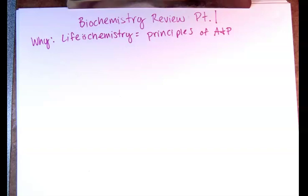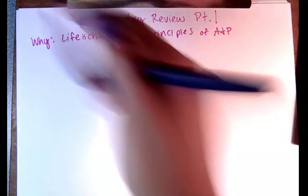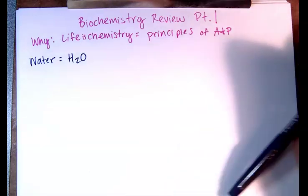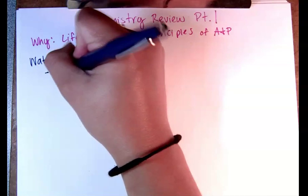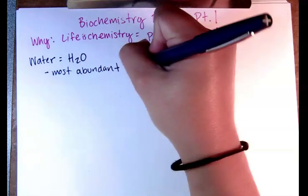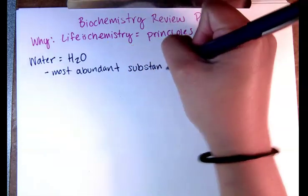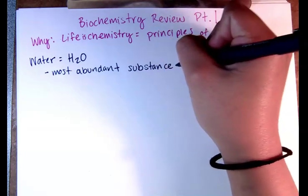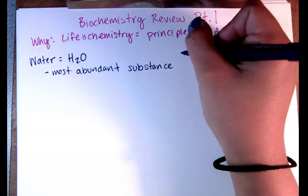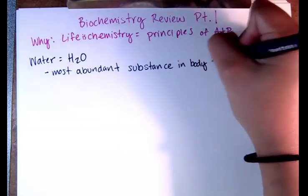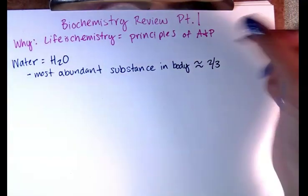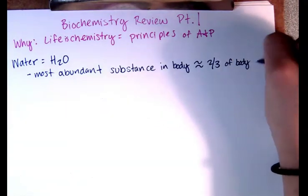The first thing I want to go over is water. Water is very important — we know that we need water to live, but why is water so important? First of all, it is the most abundant substance in your body. You hear a lot of percentages like you're 60% or 70% water — there's not a fixed number, but a good average is about two-thirds, somewhere between 60 and 75% of body mass.